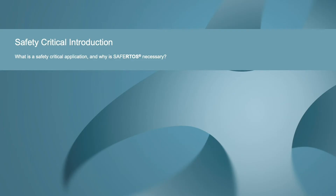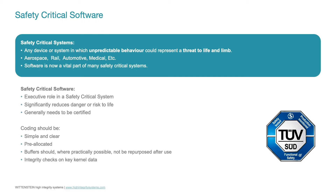What do we mean by safety-critical software? Well, obviously it's software with some kind of executive role in a safety-critical system, which is, broadly, something that might kill someone or have some other grave consequence if it goes wrong. Aerospace, rail, automotive, medical — all kinds of industries have safety-critical systems, and software is more and more a part of all of them.